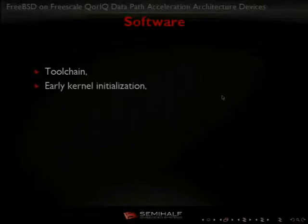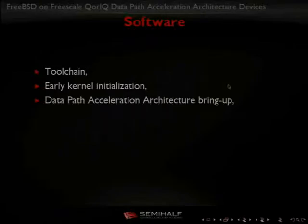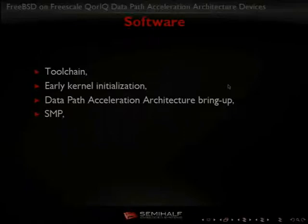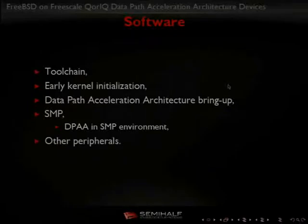That covers the hardware. Now let's talk about software — how we use FreeBSD for such devices. First, we needed toolchain work because of the new core. We need early kernel initialization for the new TLB and new virtualization support. Then a really big piece of work was bringing up networking. We also want to support multiprocessing, and there are some issues connecting multiprocessing with DPAA. We are also supporting other peripherals like PCIe.